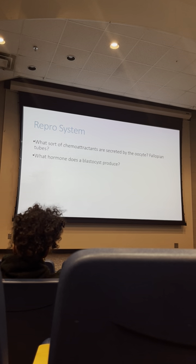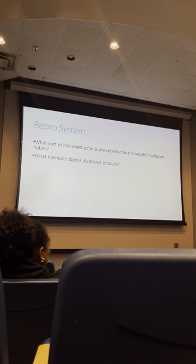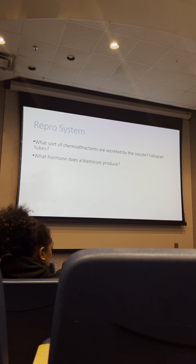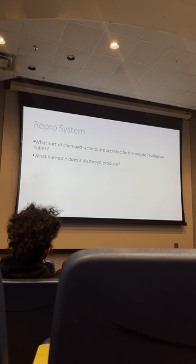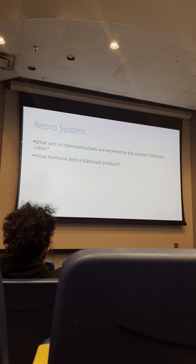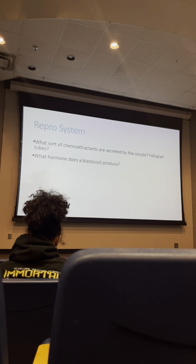Once the blastocyst implants, it makes a specific hormone called HCG — human chorionic gonadotropin — the pregnancy hormone, which is what pregnancy tests detect. HCG tells the ovaries to maintain the corpus luteum, which acts as a temporary placenta before the real placenta develops, providing progesterone and estrogen. The corpus luteum is kept around for about 12 weeks, then degraded once the placenta is established.